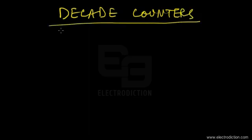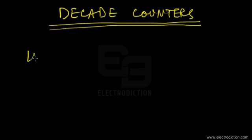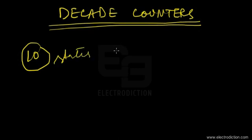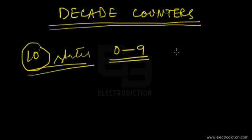Welcome to a tutorial on digital electronics. Today we're going to discuss decade counters. Decade counters are a type of counter circuit constructed using flip-flops, and they pass through a total of 10 states of count, starting from state 0 through to state 9. That makes 10 states of count.